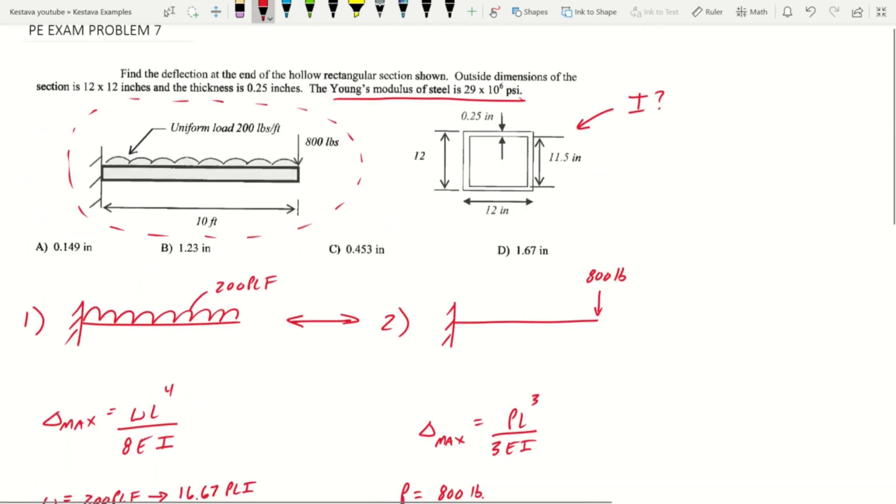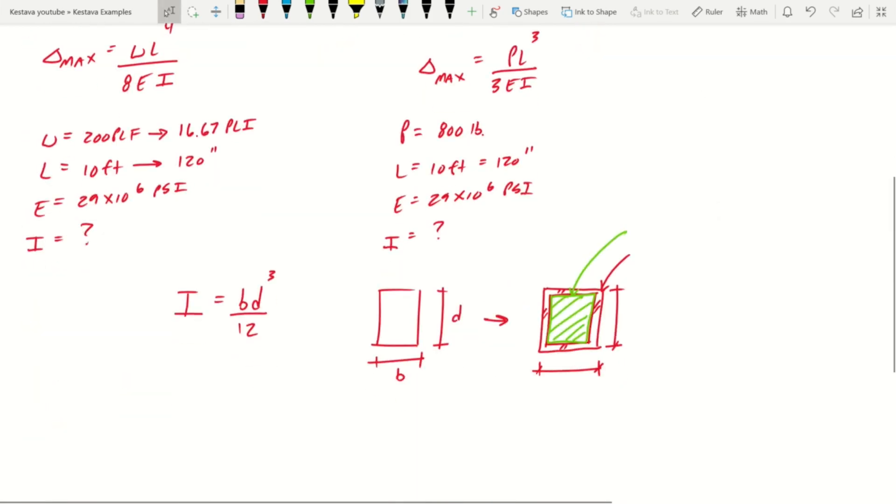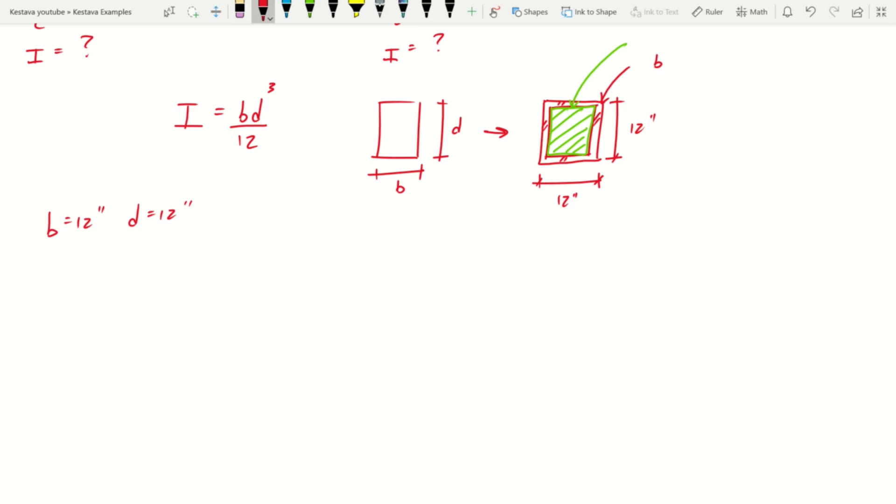Let's start with the big one first, it's 12 by 12. So b equals 12 inches and d equals 12 inches. For our outer box we know we have b of 12 and a d of 12, so I outer equals 12 times 12 cubed over 12. Well those two 12s can go away, so that equals 1728 inches to the fourth.